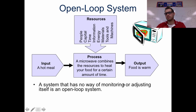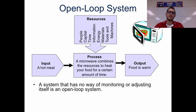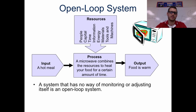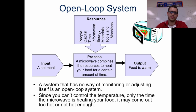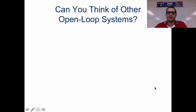If it doesn't monitor itself, it doesn't change anything. Some microwaves do have sensors, but we're assuming this is just the cheapest microwave from Walmart with a little knob that turns — it stays on at one power and then turns off after a certain amount of time. This is just a simple on and off system — one and zero. Since you can't control the temperature, only the time the microwave heats your food.